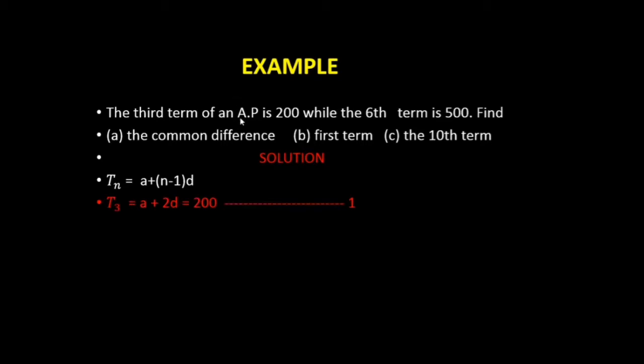In the question, we've been given the third term of an AP to be 200. That means T₃ = a + (3 - 1)d = a + 2d = 200. That gives us equation 1. The sixth term of an AP is 500, that means T₆ = a + 5d = 500, equation 2.